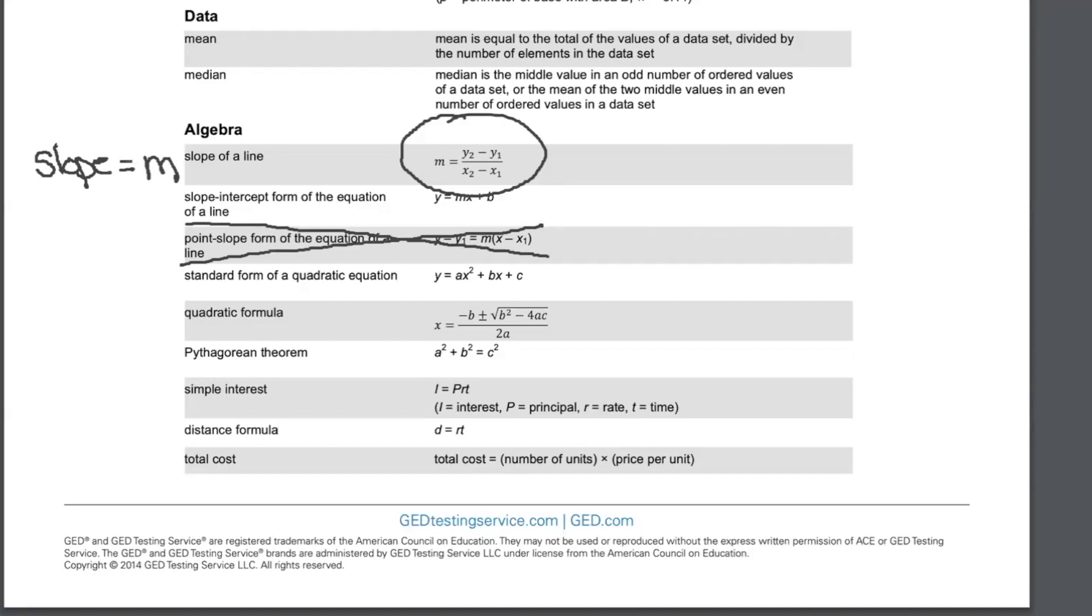So when do I use that? I use that when I have two X's and two Y's. That's when I have points. So when I'm given two points, and a point has an X value and a Y value, and then another X value and a Y value. So we'll just call that X1 and Y1, the first X and the first Y. And then we'll call that X2 and Y2, the second X and the second Y. And so mark on your sheet here, guys, you use this to find slope when given two points.